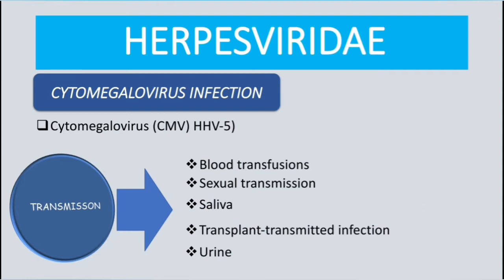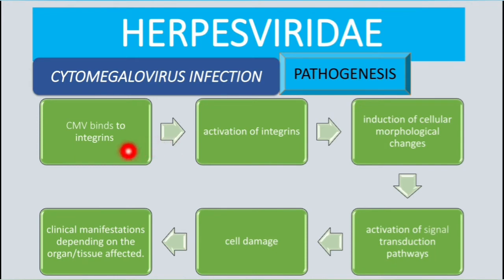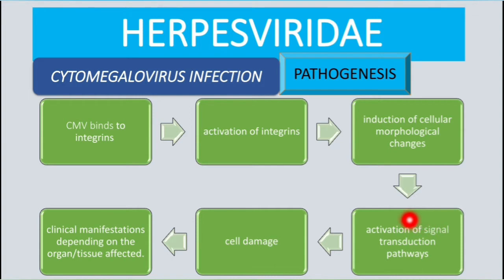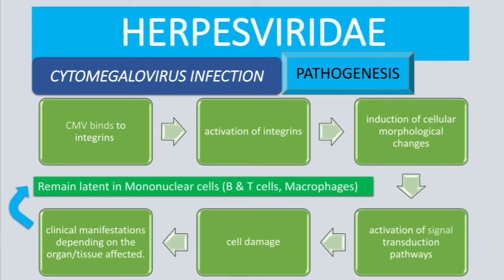Now let's talk about pathogenesis. CMV binds to integrins, leading to activation of integrins and induction of cellular morphological changes. This leads to activation of signal transduction pathways such as focal adhesion kinases and the apoptotic pathway, resulting in cell damage. Like most herpesviruses, CMV can remain latent in mononuclear cells — B and T cells and macrophages.